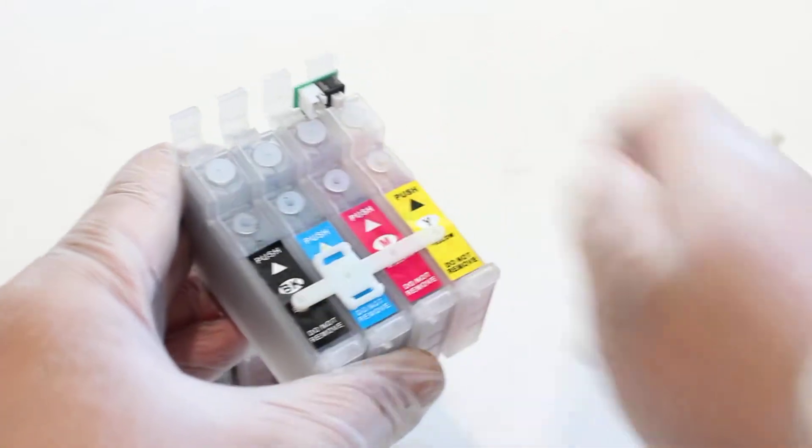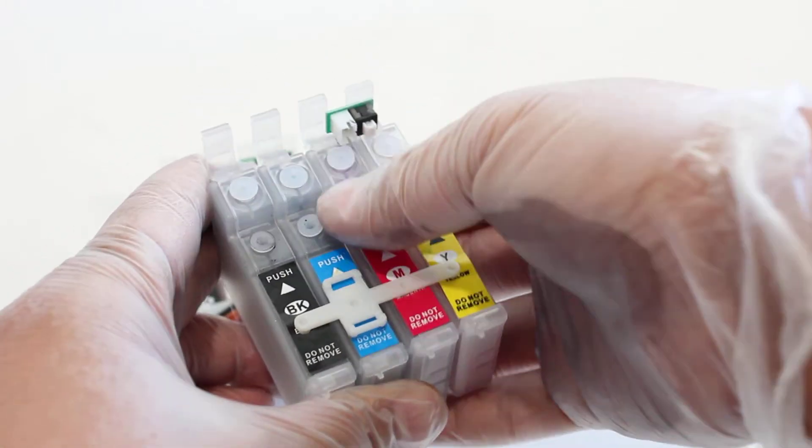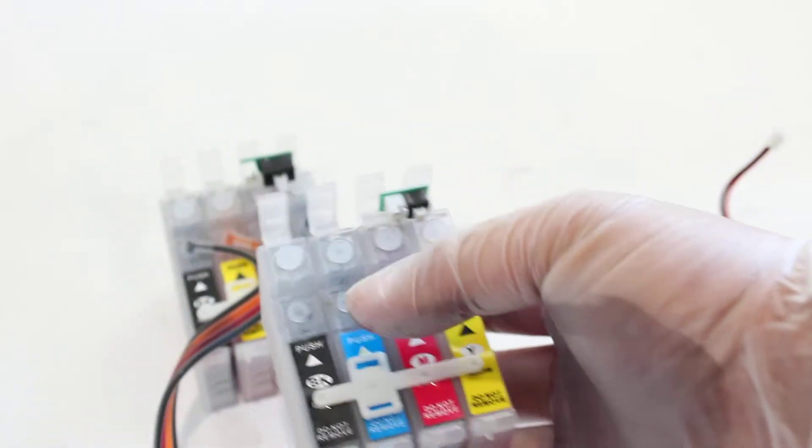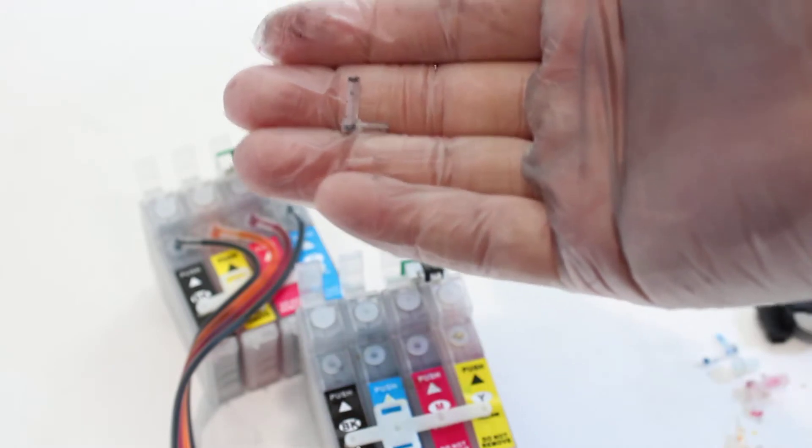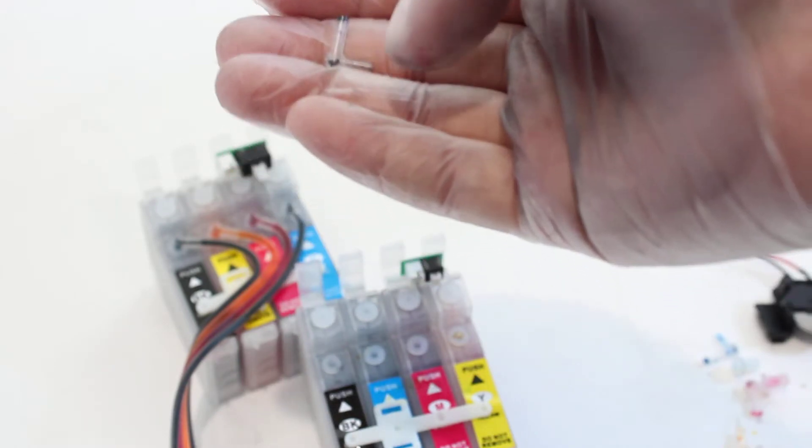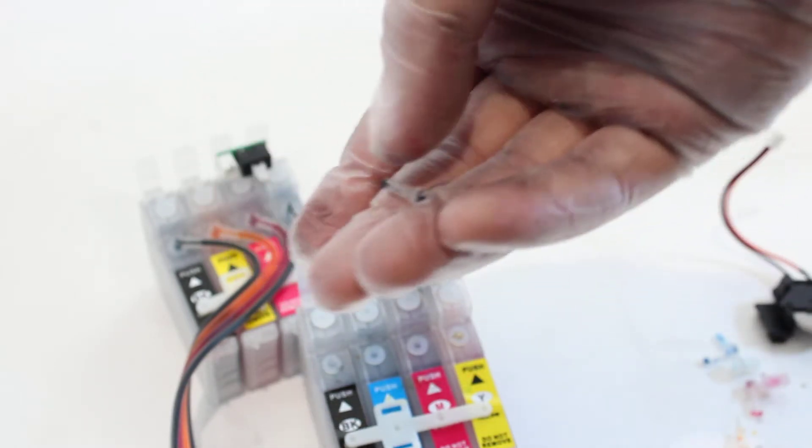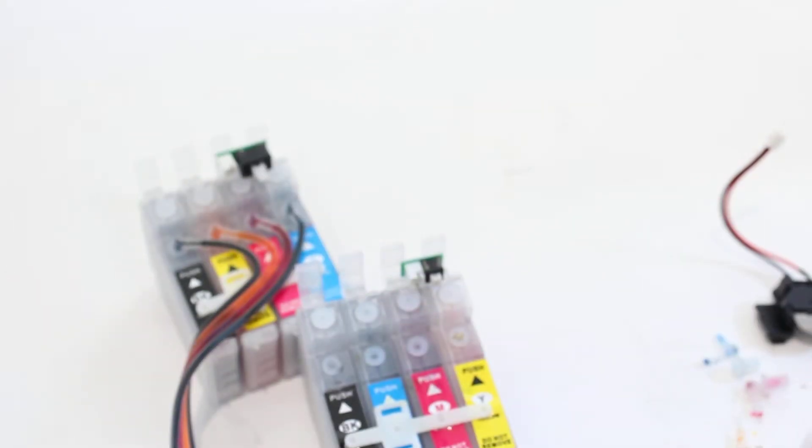And this would be the same method for any other type of cartridges that might look different from this. They have the same setup with the grommet here and then as you can see an elbow right here. It's an L-shaped elbow. The longer part of the L goes down into the cartridge and a stopper that kind of just plugs up anything so you don't have to worry about it spilling. Usually you could save those for parts.